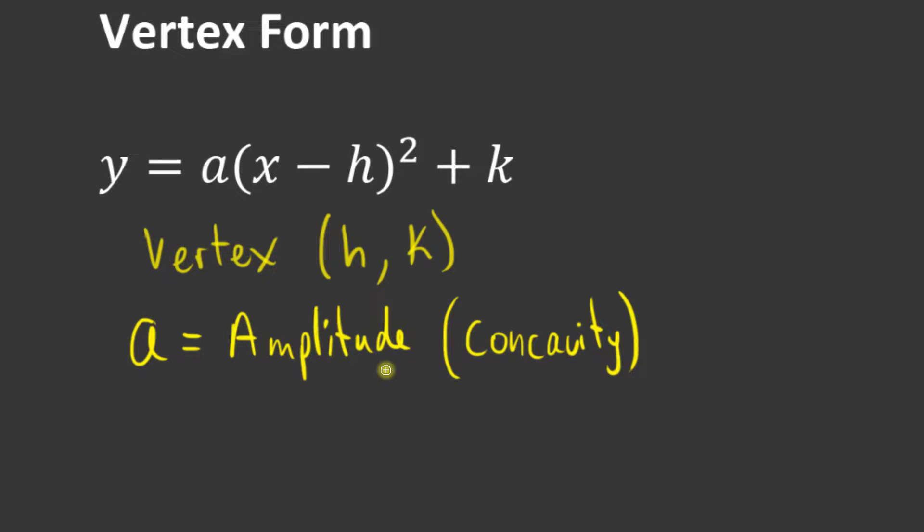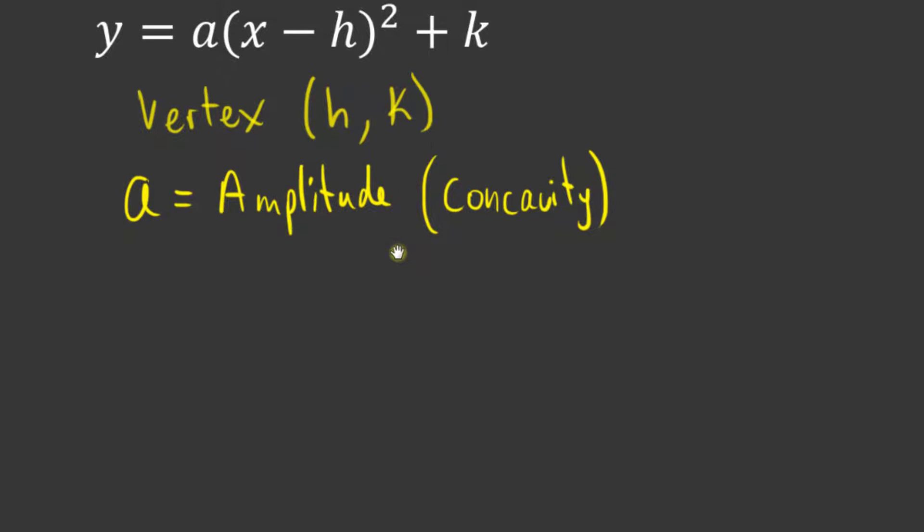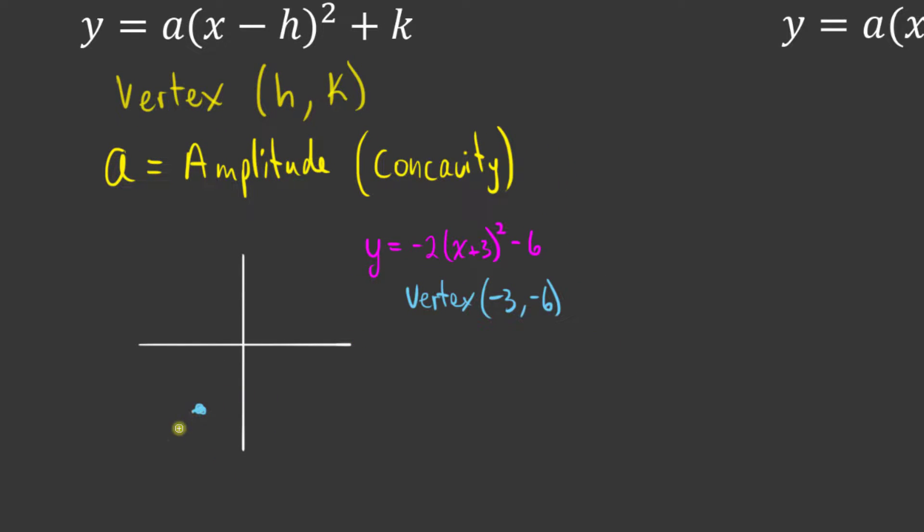That tells us if it opens up or down, and also if our parabola has stretched or compressed. Should we have a quadratic in vertex form, maybe it is something like y equals negative 2(x + 3)² - 6. We can visualize how many zeros this is going to have. I know it opens negative, it's concaved down because my a value is negative. I know my vertex is at (-3, -6), so I'm not going to have any zeros whatsoever. We say no real roots.